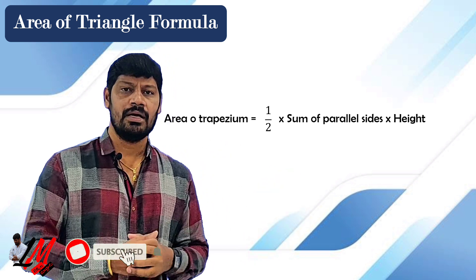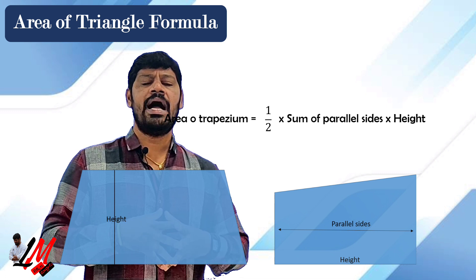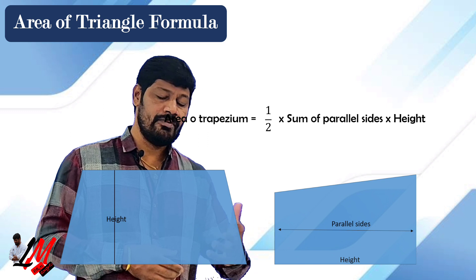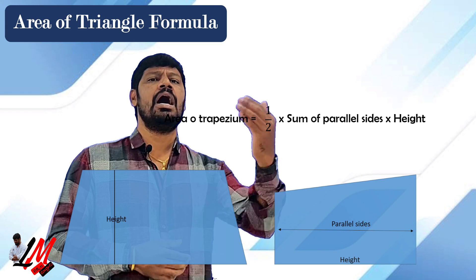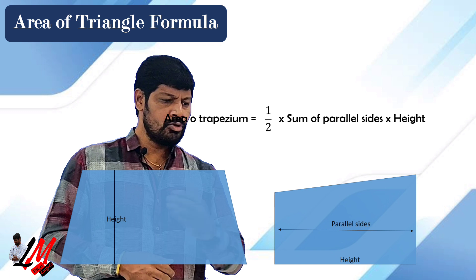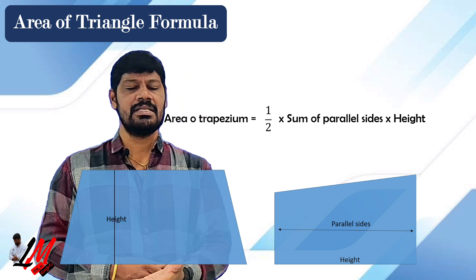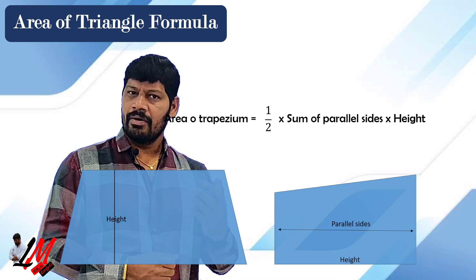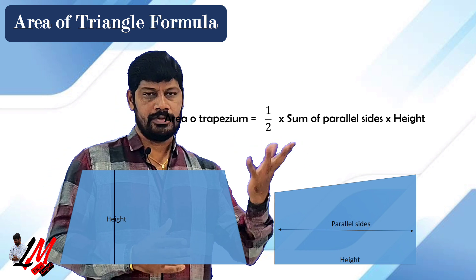This is the formula for the area of trapezium. When you take a trapezium, height means the distance between the parallel sides. Sometimes we may get a trapezium in which one angle is 90 degrees — automatically the adjacent angle is also 90 degrees. I am showing both figures here, whether it is a general trapezium or a right trapezium. Whatever the case, the trapezium formula doesn't change: half into sum of parallel sides into height.